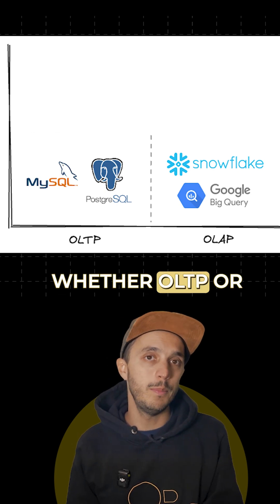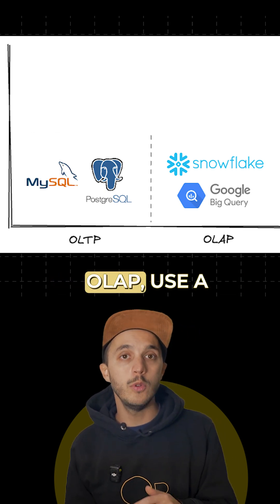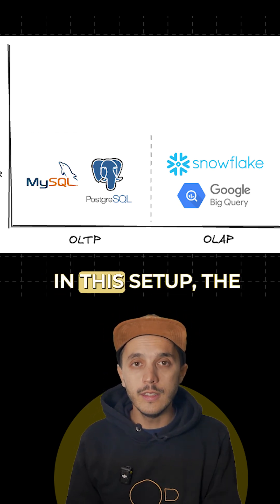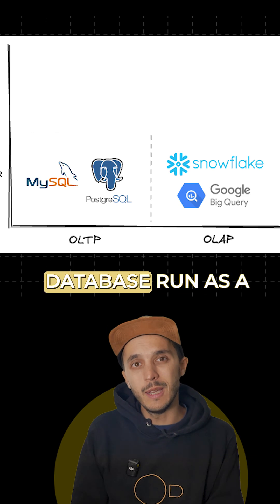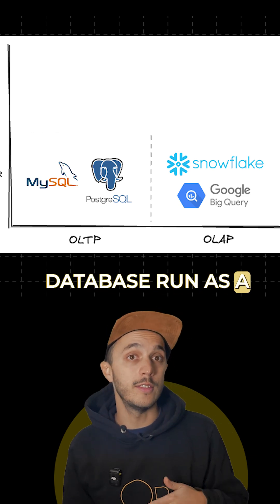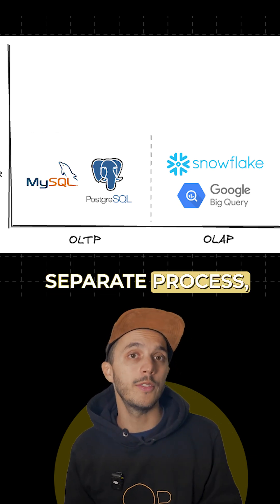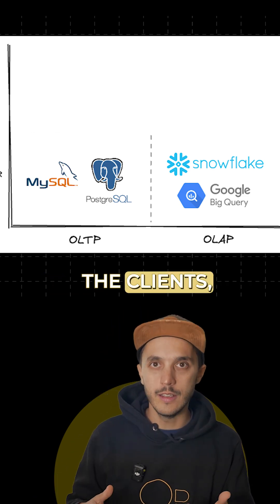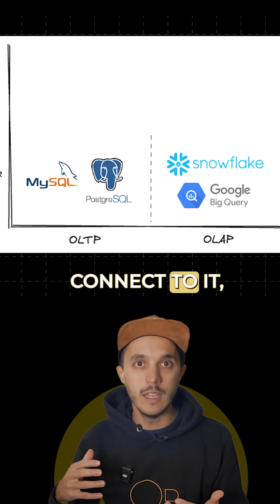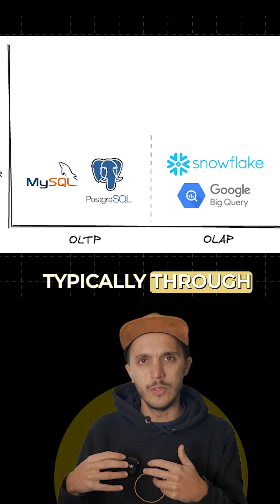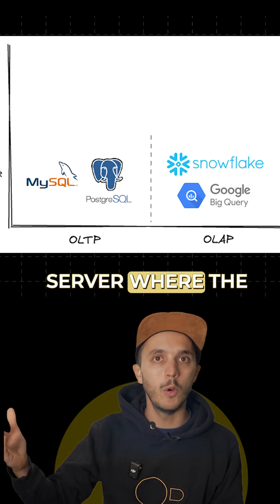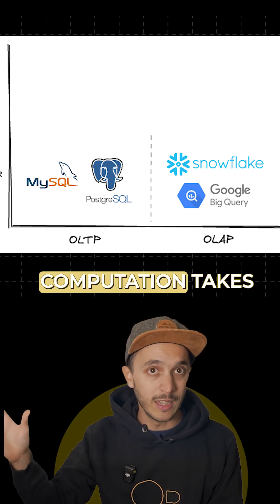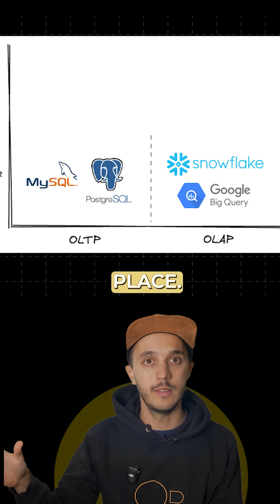Most traditional databases, whether OLTP or OLAP, use a client-server architecture. In this setup, the database runs as a separate process and applications — the clients — connect to it, typically through SQL queries, to the server where the data is stored and computation takes place.